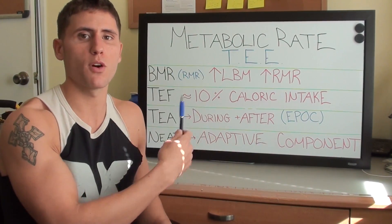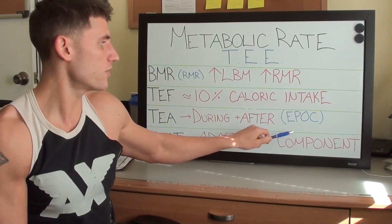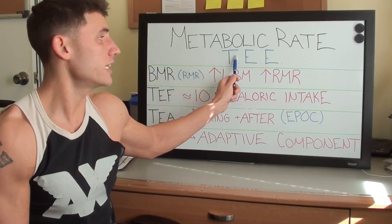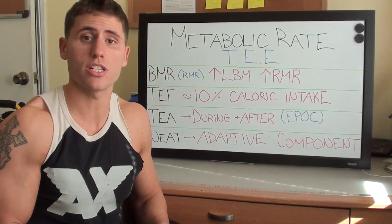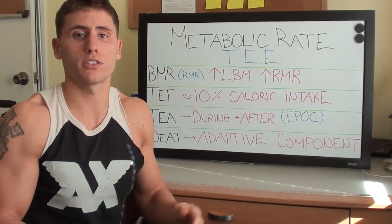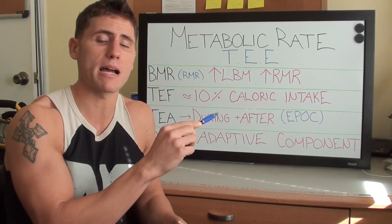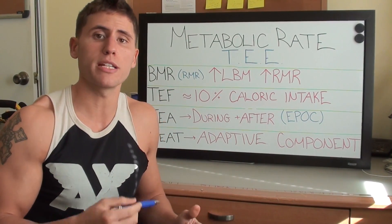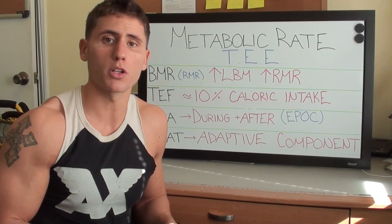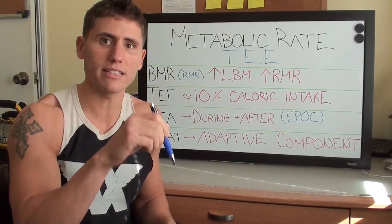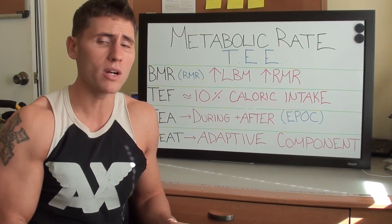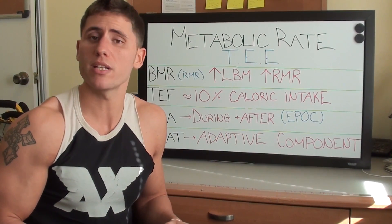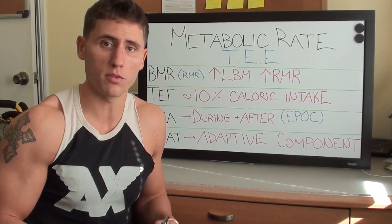So that's a brief overview. Each of these components — BMR, TEF, TEA, and NEAT — added together will equal your Total Daily Energy Expenditure. Hopefully you learned something about metabolism and metabolic rate. If you're interested in learning more, this comes from an article by Lyle McDonald, linked in the description below, giving more detail on each component and a metabolic rate overview.